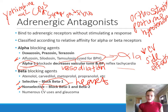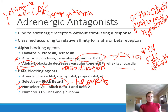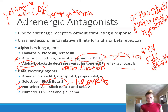Beta blocking agents have numerous cardiovascular uses including hypertension and heart failure. They are also utilized in glaucoma to decrease intraocular pressure, and have other uses like migraine prevention, which we'll get into.